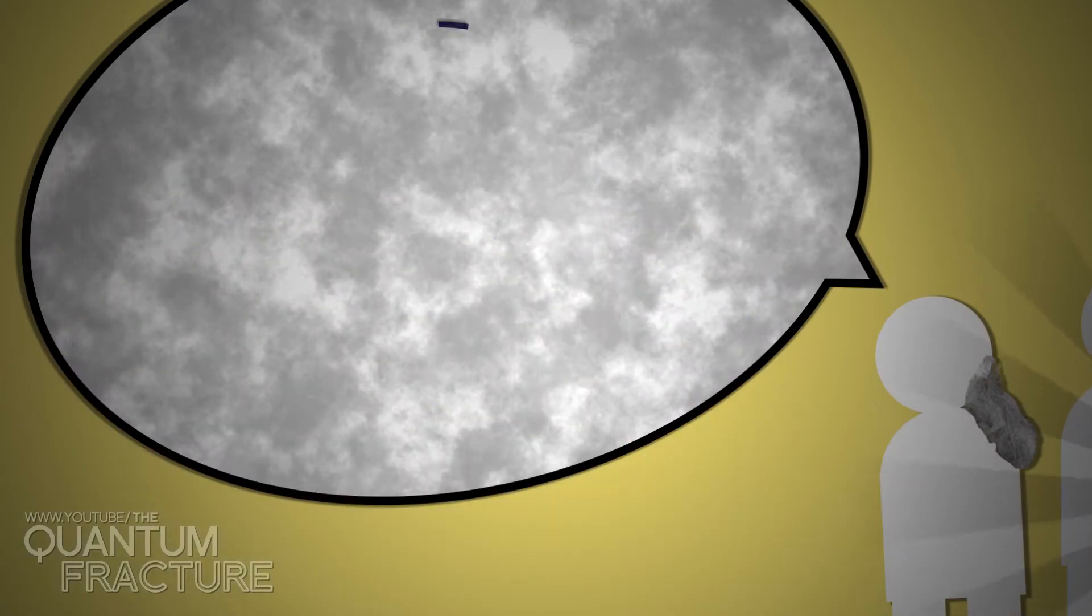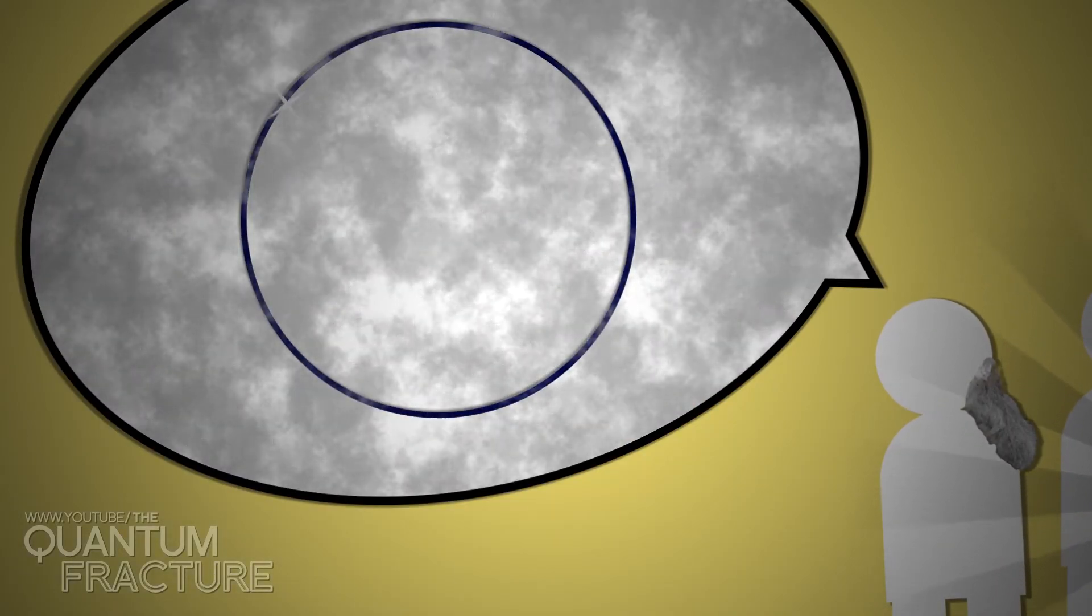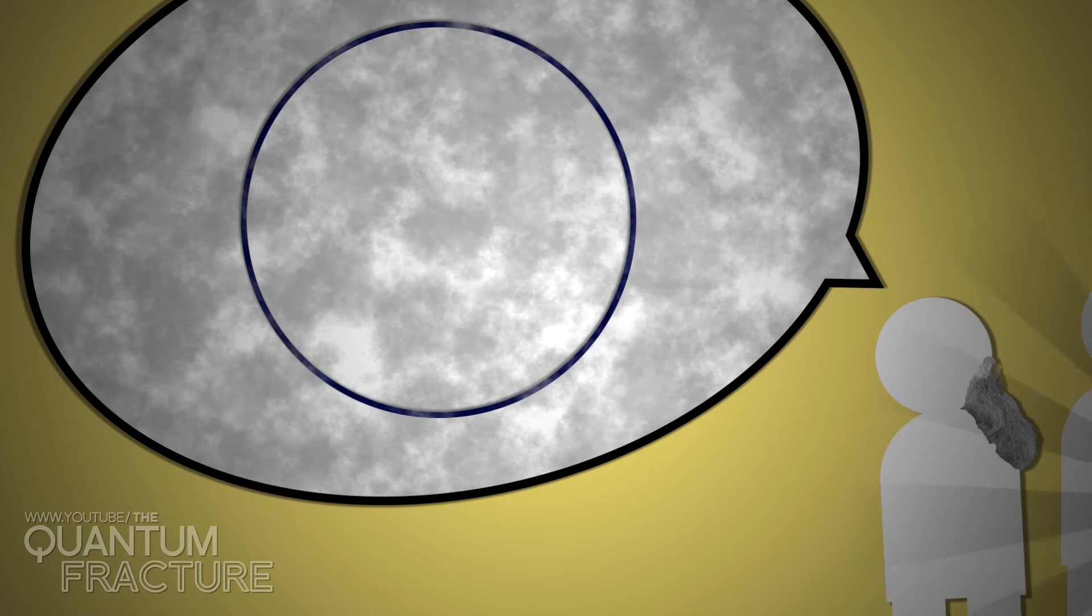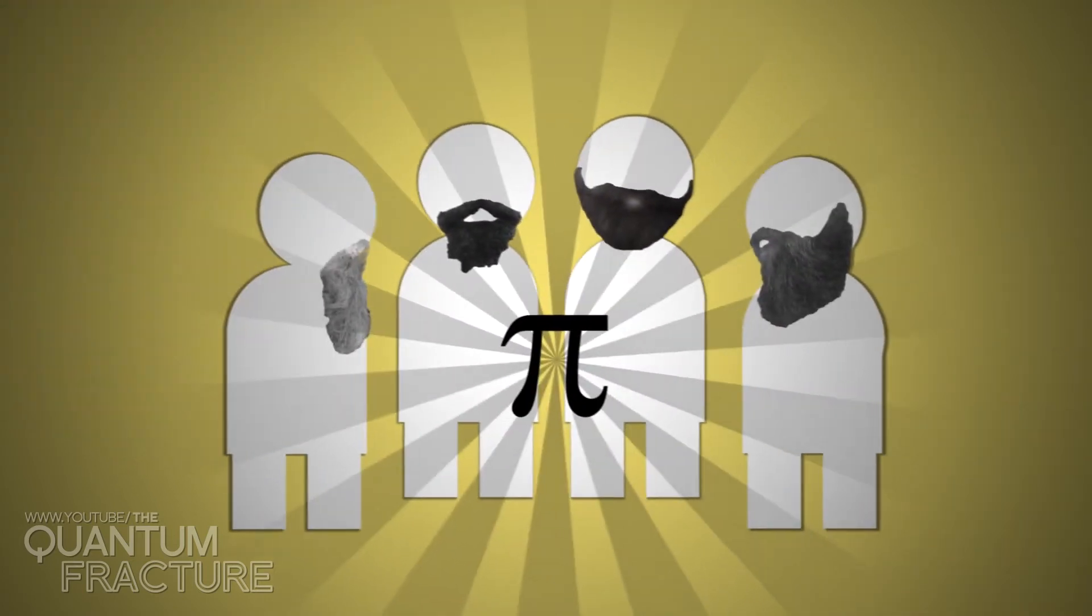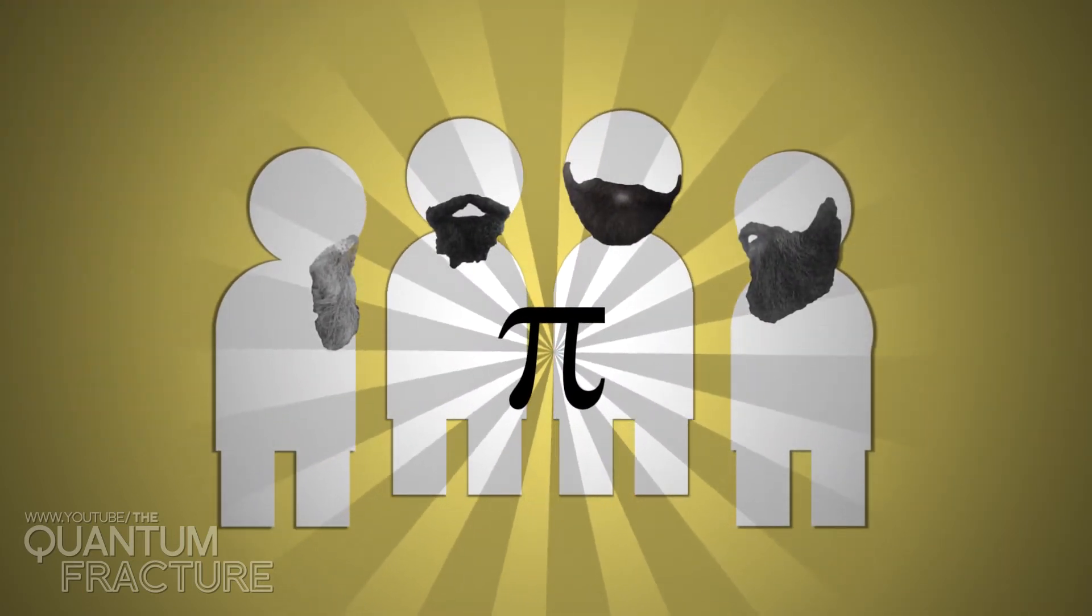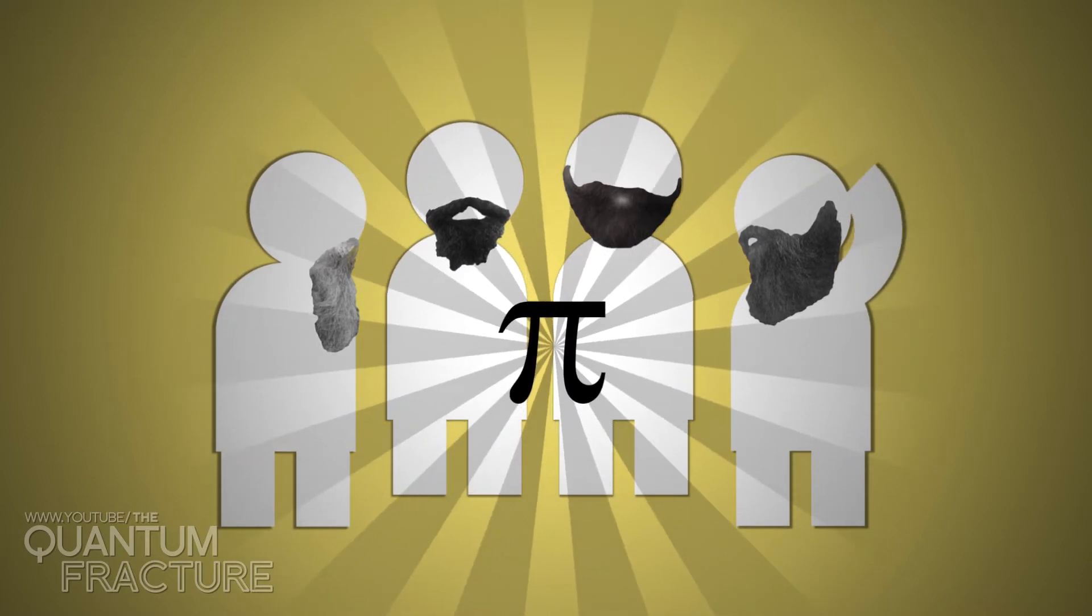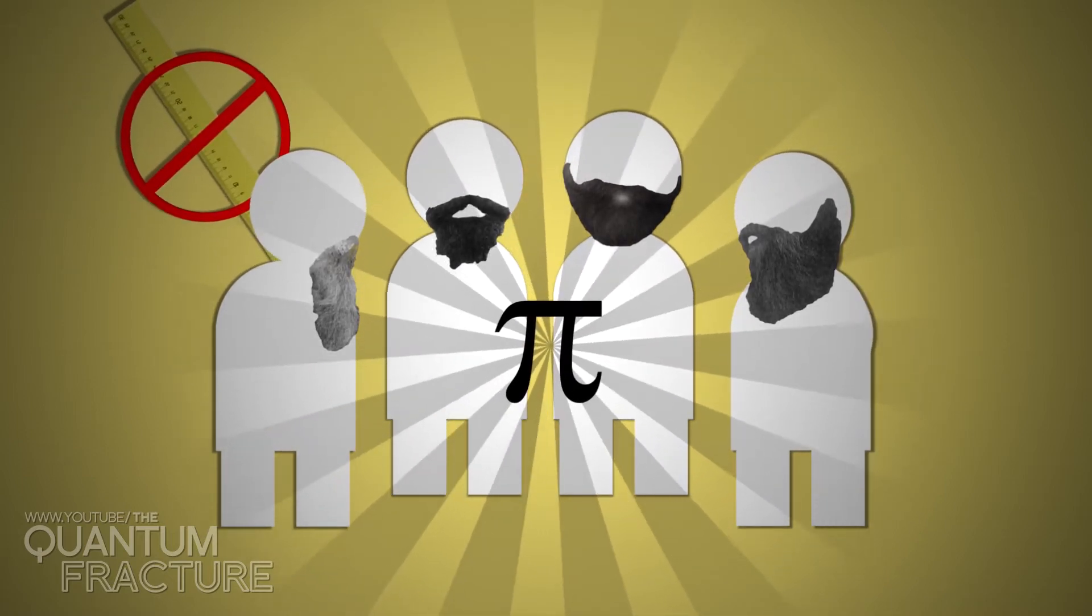Never forget that perfect circles exist only in our minds, and that's where we have to solve this problem. And that's how, after centuries of brooding over it, mathematicians have found several methods of reaching this value without having to use rulers and compasses.